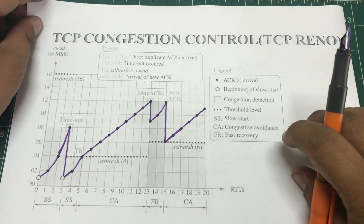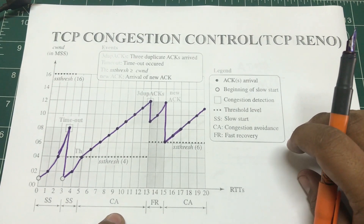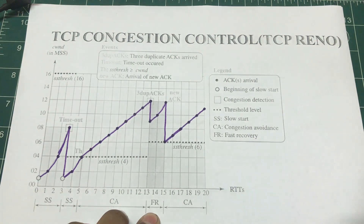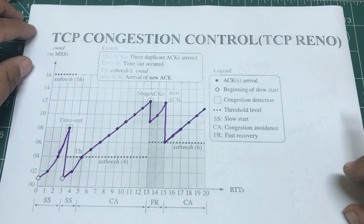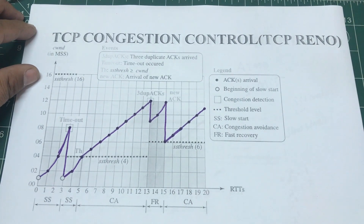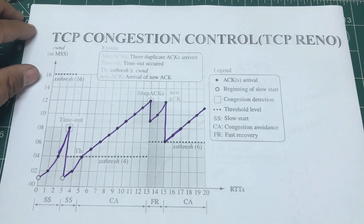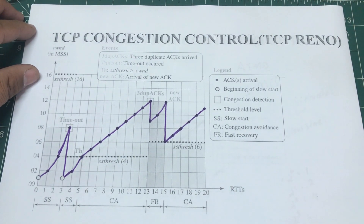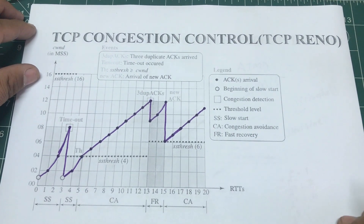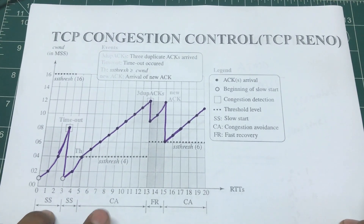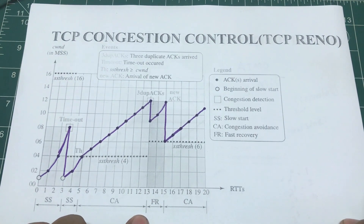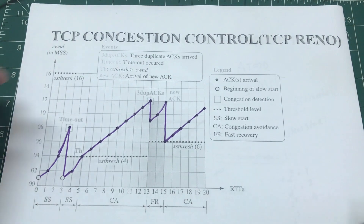TCP Reno still has a slow start region and a congestion avoidance region, but it adds another feature called fast retransmit, also known as fast recovery. In TCP Reno, triple duplicate ACKs are treated as a mild congestion condition — not as harsh as a timeout. So TCP Reno introduces a third region: fast recovery, or fast retransmit.